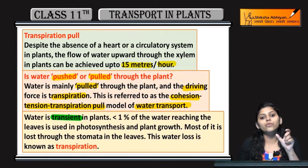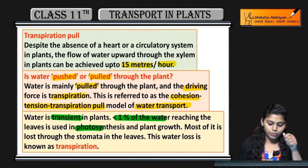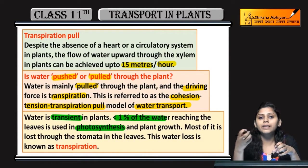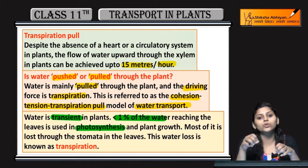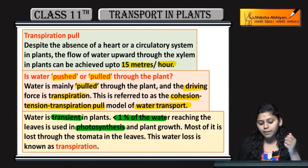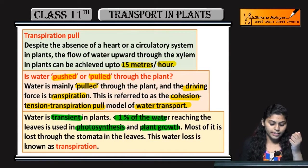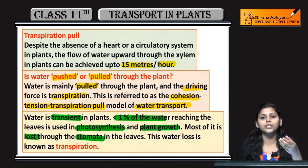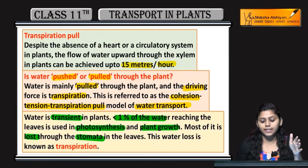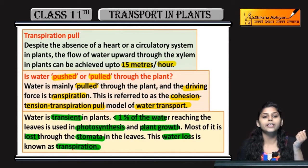Jo water hai plant mein, transient around one percent of water jo leaves tak pahunchta hai, they are used in photosynthesis. Jitna bhi paani leaves tak pahuncha, us mein se bhi less than one percent hi photosynthesis mein utilize hota hai. Maximum water other than one percent is lost through the stomata. Leaves mein stomata present hote hain — kuch pores present hote hain — wahaan se excess water nikal jaata hai. Is water loss ko transpiration bolte hain.